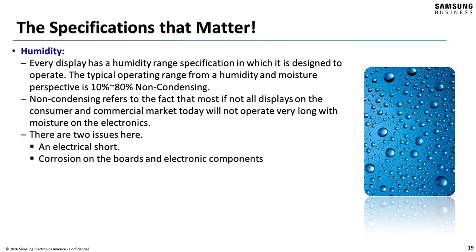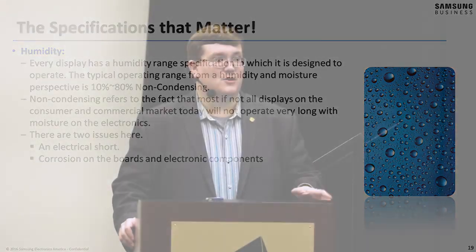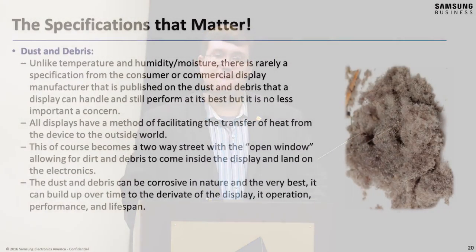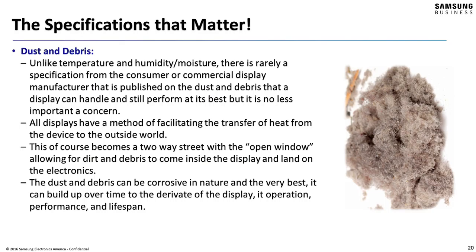Humidity and moisture are relatively straightforward — check the spec sheet, and you're going to see a range of percentage of humidity, almost always specified as non-condensing. Make sure the humidity in the environment you're putting the display into doesn't exceed what's listed. You'll see a lot of displays specified at about 10 to 80%, though that changes when we start talking about IP-rated panels. Dust and debris is an important one that a lot of people don't consider — what makes you think your displays want to breathe in a ton of dust and nasty sediment?